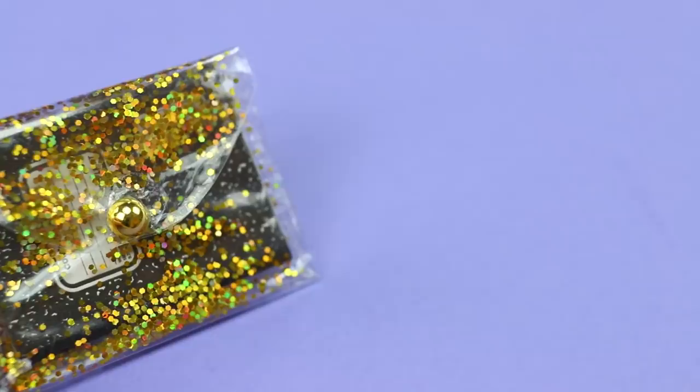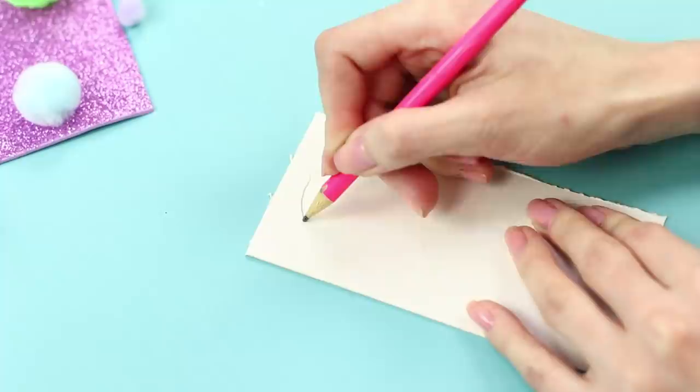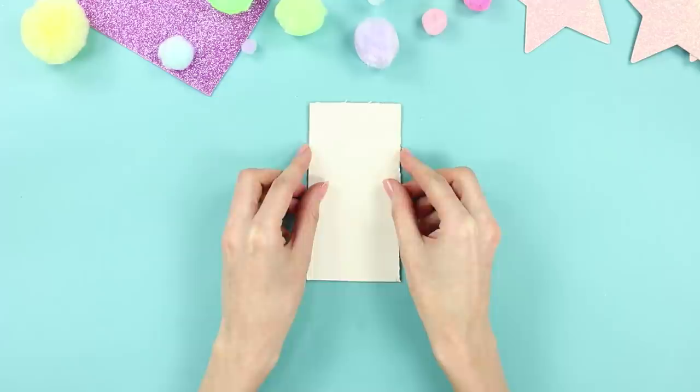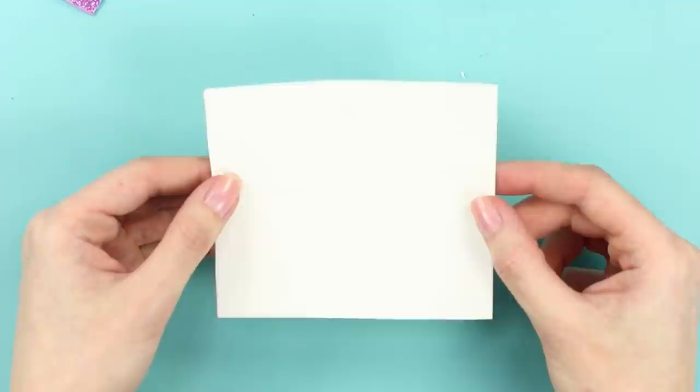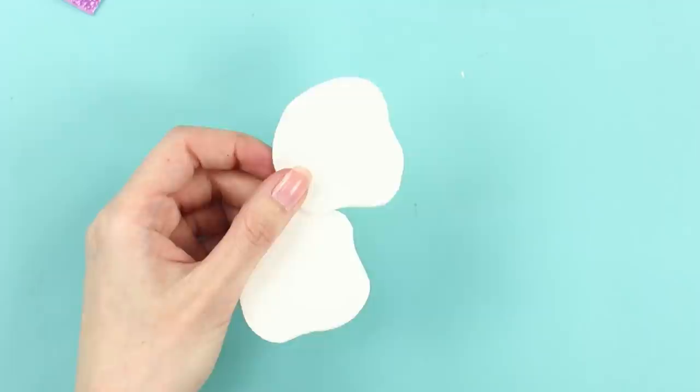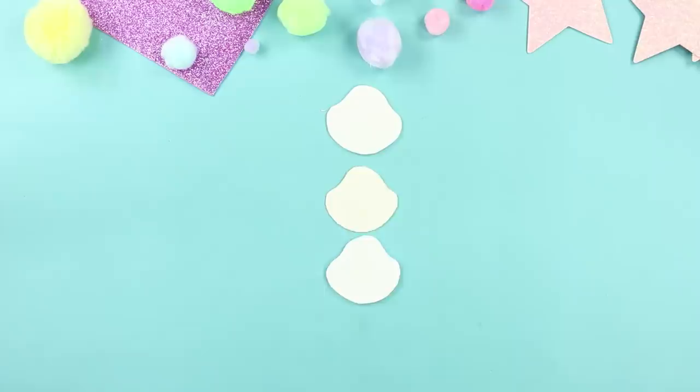For another idea, you need a piece of cardboard. Draw a free-form figure with a simple pencil. Cut it out. Make two pieces. Cut out figures of the same shape from a white foam rubber sheet. Place the cardboard between the foam rubber sheet parts. Hot glue it on.